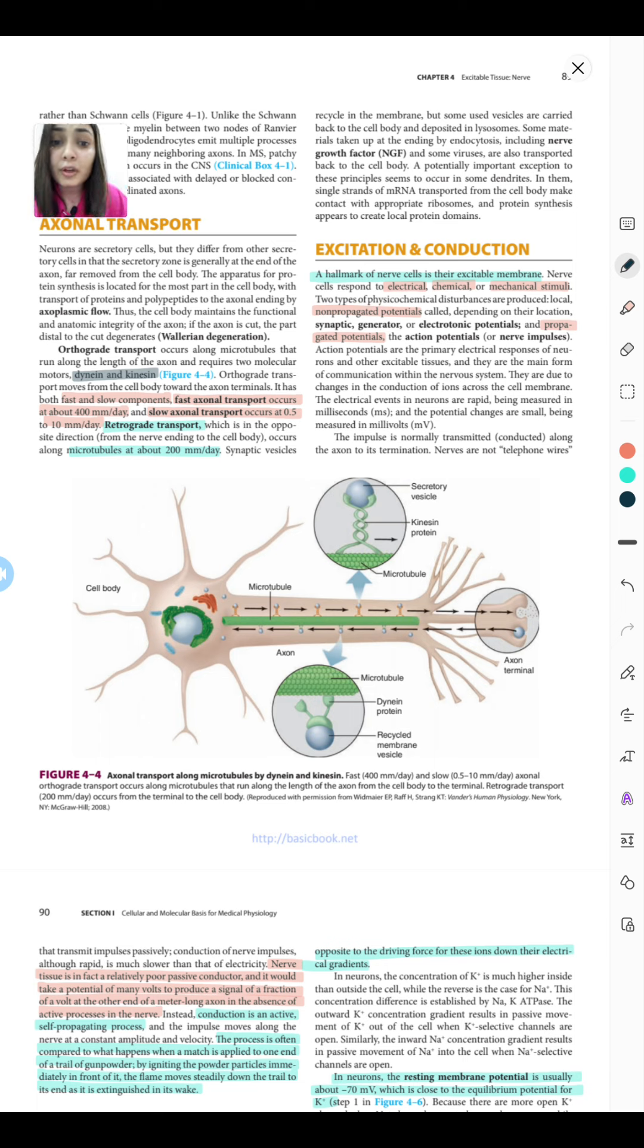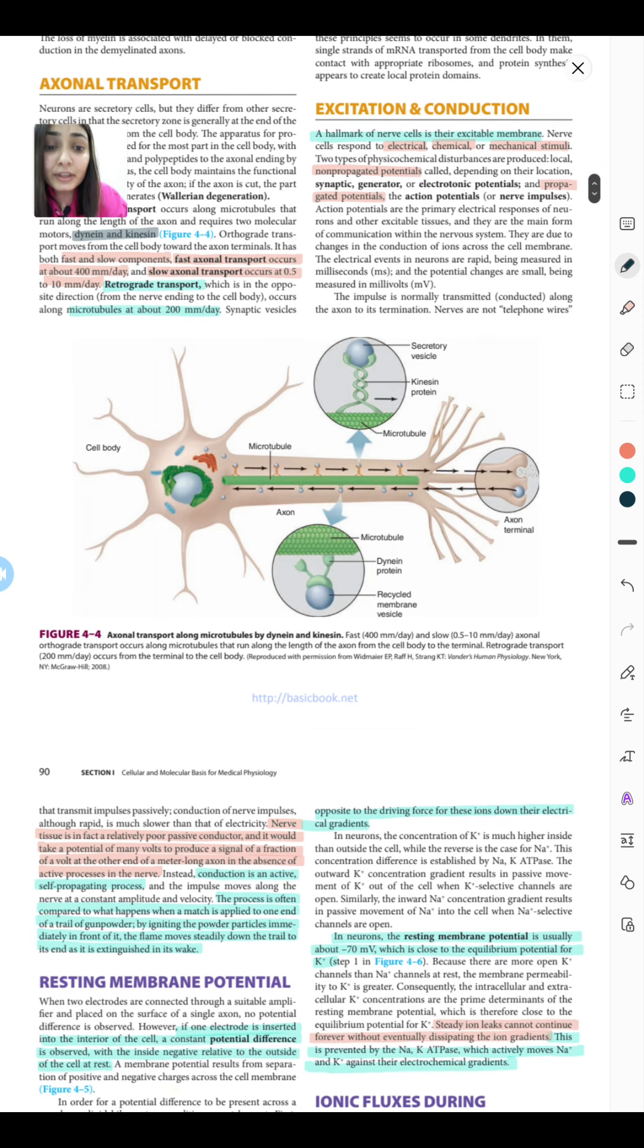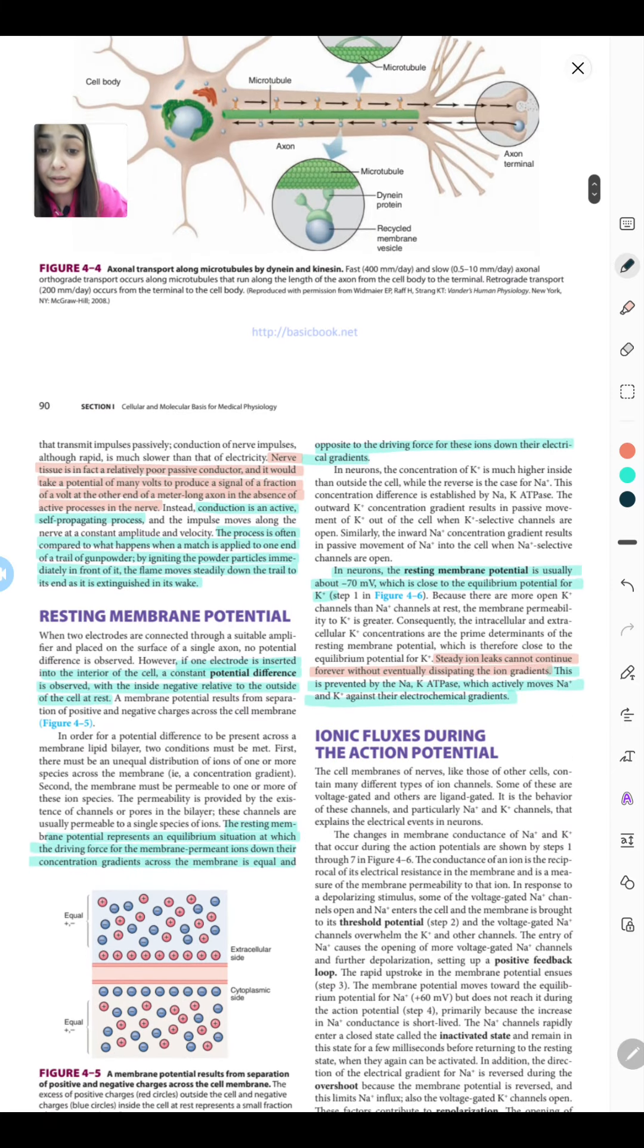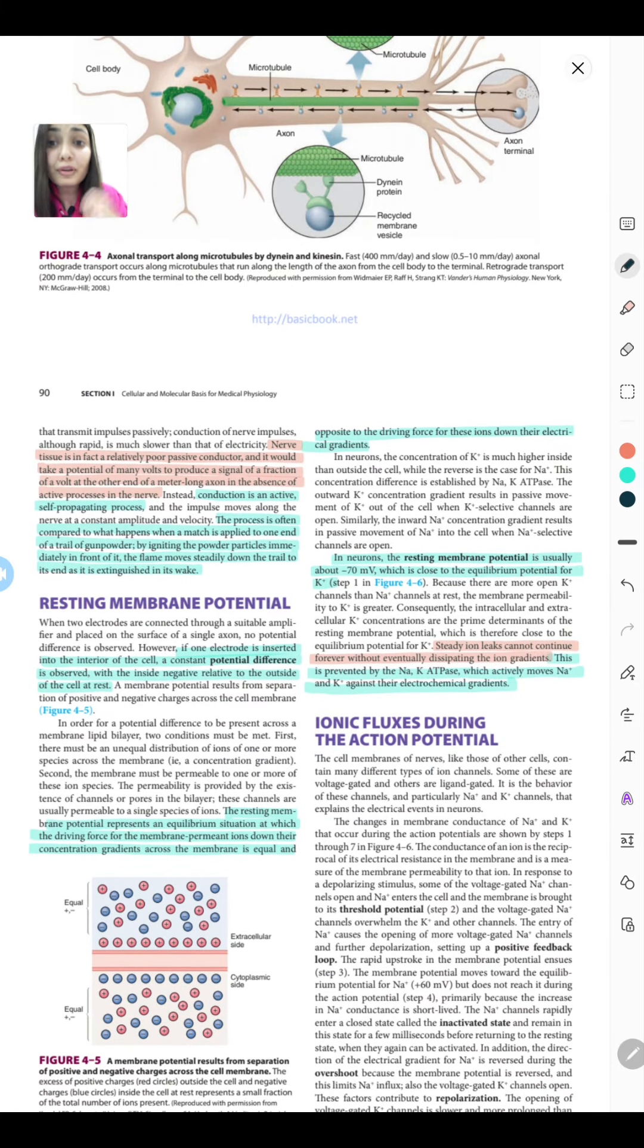When thinking about nerves, Ganong has given a really good analogy: nerves are not just like telephone wires that transmit signals from one place to another. These are not conduits or passive wires that transmit the signal—it's an active process at each and every point of that wire with changes in membrane potential that lead to conduction of the message. There's a line written here that nerves are not telephone wires that transmit impulses passively. If passive conduction had to happen, the nerve would be a very poor passive conductor and would take many volts to produce a signal. Actually, this is an active, self-propagating process, and this special property is due to the excitable membrane.